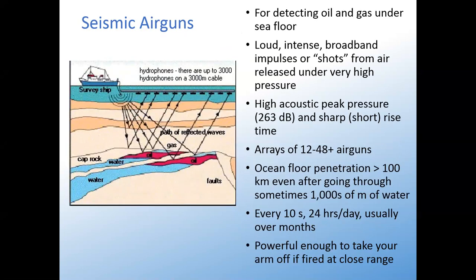Going into the seismic air guns a little further: on the seismic survey ship you have the source of the sound — these seismic air guns, arrays of about 12 to 48. They all shoot at the same time. That sound can travel through thousands of meters of water, then further penetrates sometimes even 100 kilometers into the ocean floor. The echoes bounce back from various sediment layers and go into underwater microphones towed behind the ship — sometimes on three-kilometer-long cables called streamers. That records the echo and that way they can figure out if there's oil and gas under the ocean floor.